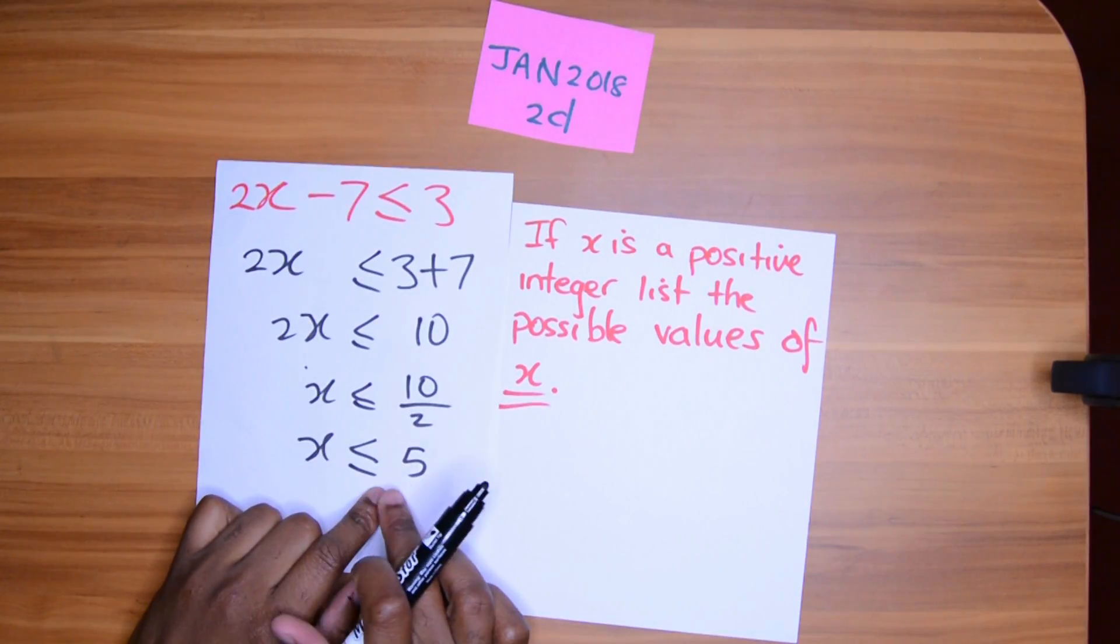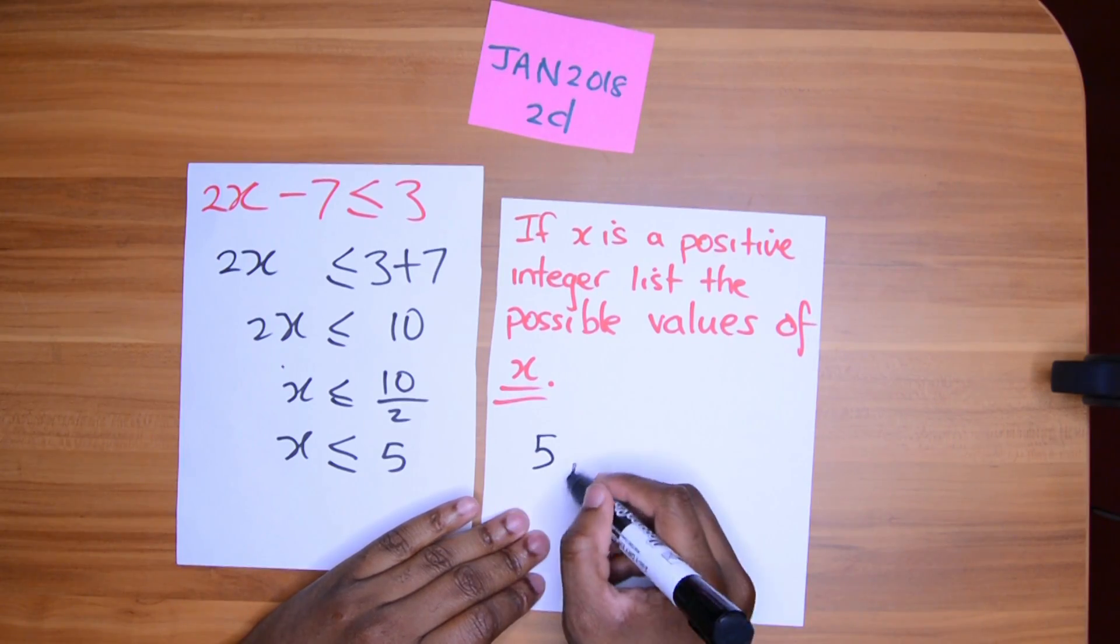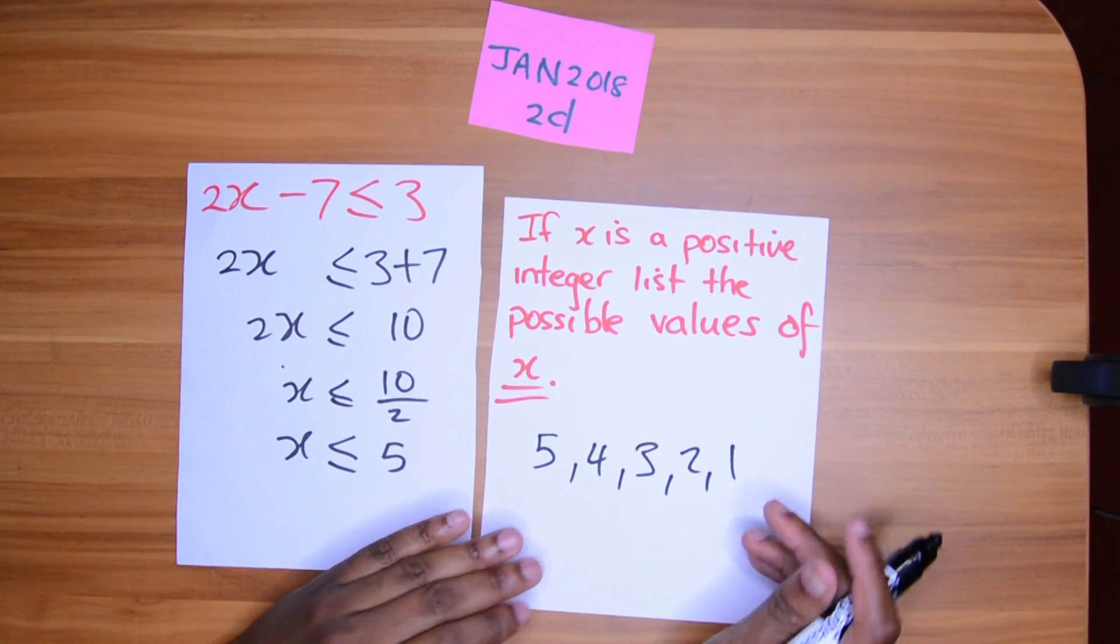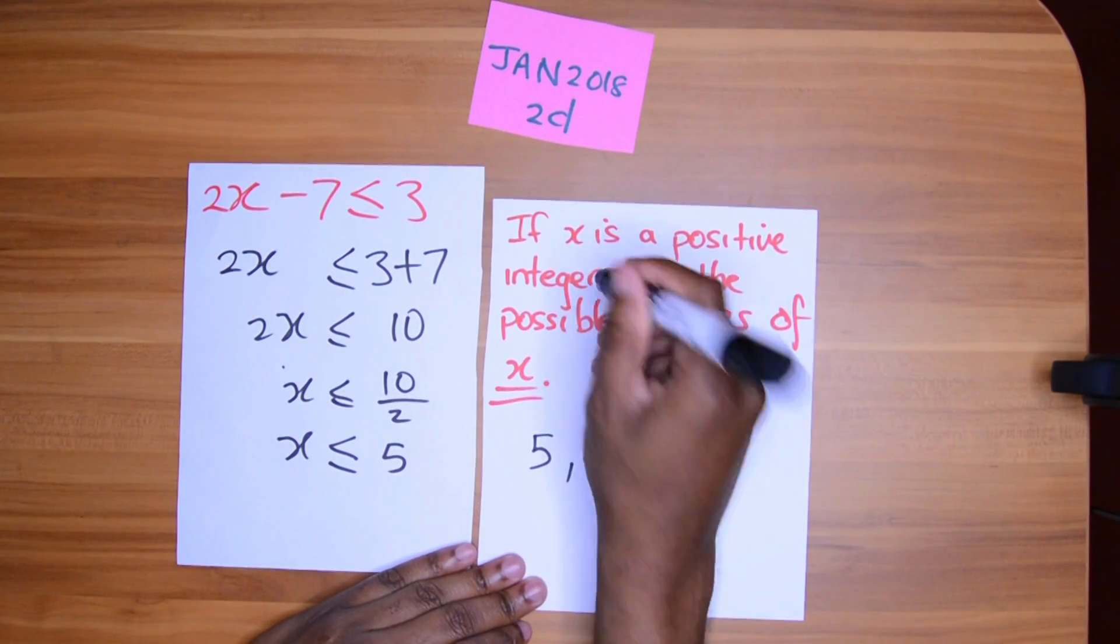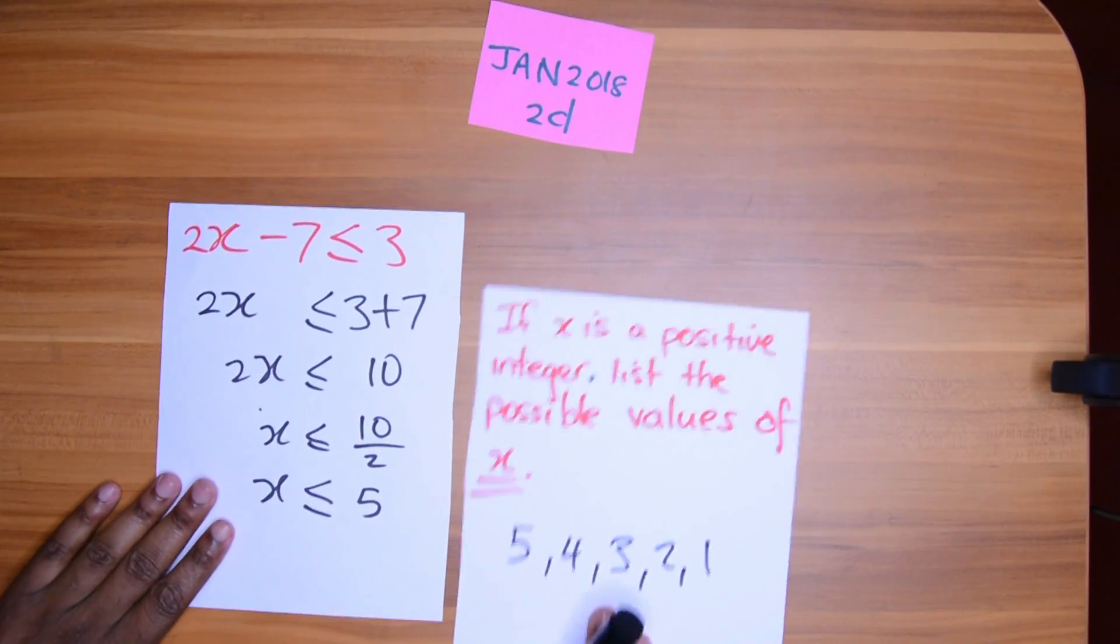Oh, so since x must be less than or equal to 5, x can be 5. x can be 4. x can be 3. x can be 2. x can be 1. x cannot be 0 because we only want positive integers. x is a positive integer. List the possible values of x. And that's the end of that question.